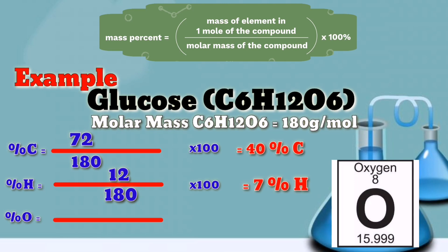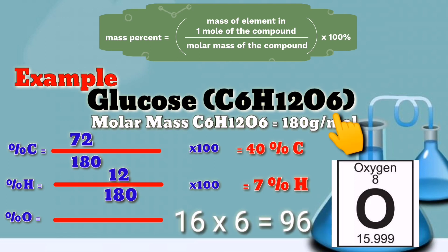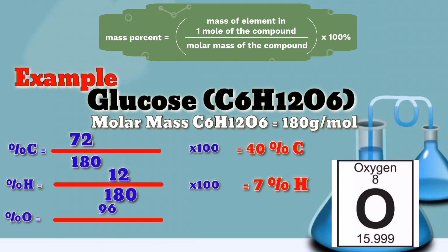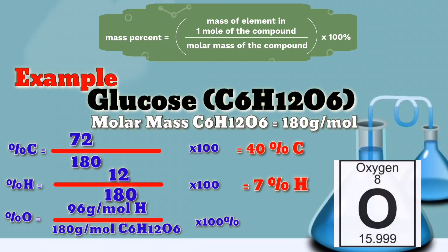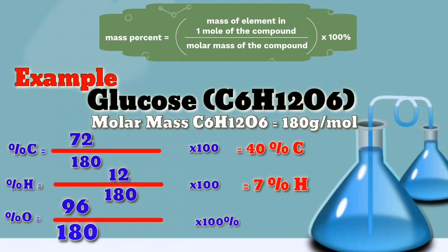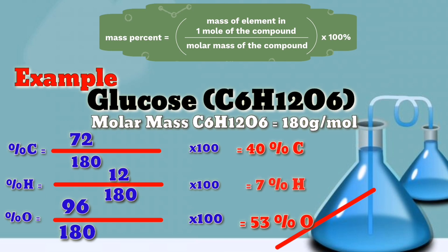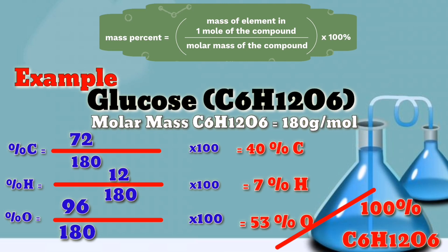Lastly, the percentage of oxygen equals the atomic weight of oxygen, which is 16, multiplied by 6 since we have 6 atoms of oxygen, giving 96 grams per mole. Over the molar mass of glucose, 180 grams per mole, times 100 percent. So 96 divided by 180 times 100 equals 53 percent oxygen. The sum: 40 percent carbon plus 7 percent hydrogen plus 53 percent oxygen equals 100 percent glucose.